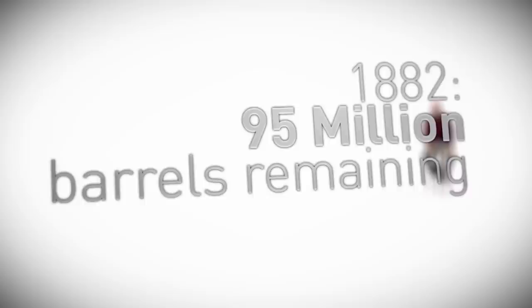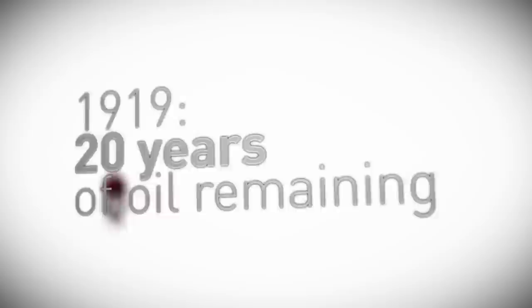If we look more closely at the data, what we find is that in 1882, estimates were that only 95 million barrels of oil remained. Given that we were consuming oil at 25 million barrels per year, that wasn't going to last very long. But by 1919, oil was still with us, and Scientific American reported only 20 years of oil left.